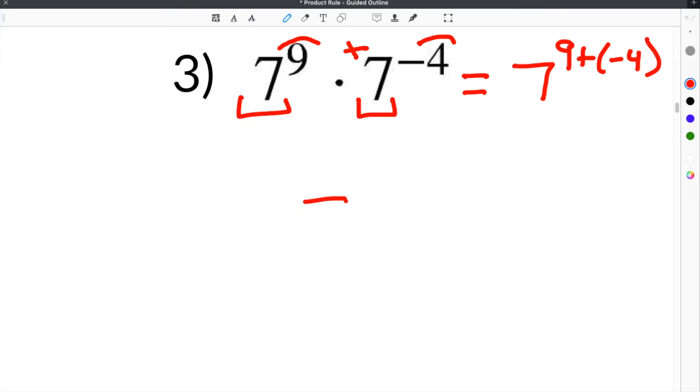And then, of course, 9 plus negative 4 is 5. So, our answer is 7 to the fifth power.